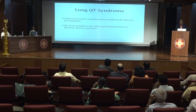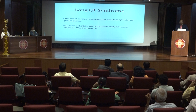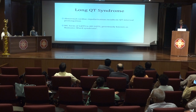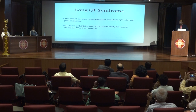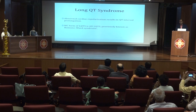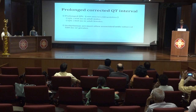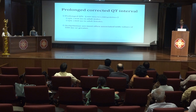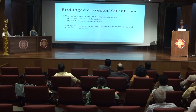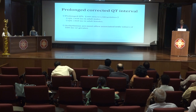Long QT syndrome is the most common ion channelopathy and is caused by abnormal cardiac repolarization leading to QT interval prolongation. The autosomal dominant form is the most common. AHA defines prolonged QT as more than 450 milliseconds in males and more than 460 milliseconds in females. As the QT interval prolongs, the risk of arrhythmia increases, and arrhythmias are most often associated when the value exceeds 500 milliseconds.